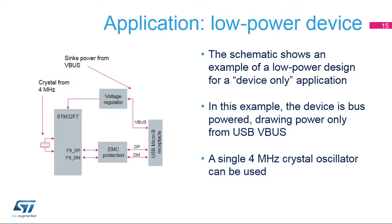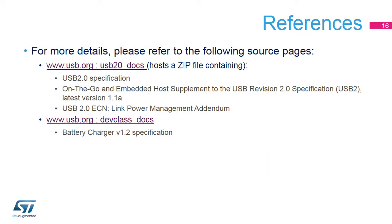Here is an application example of a low-power device. Power is drawn directly from the USB VBUS signal. A single crystal oscillator, starting from 4 MHz, is needed outside. For complete USB specification documents, please refer to USB.org. The USB 2.0 document home page has a zip file containing the USB 2.0 and OTG 2.0 specifications and an ECN for LPM. The USB device class documents page has the battery charger specification.